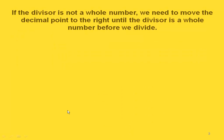The other part of this is if the divisor is not a whole number, then we need to move our decimal point to the right in our divisor until we have a whole number. We do that all before we start dividing.